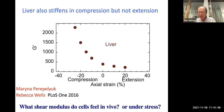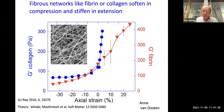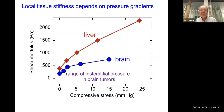That has an interesting consequence because in the body, most soft tissues are compressed or stretched - they're not just floating around in tissue culture medium. The local stiffness that a cell might feel may not be the stiffness we measure once we excise that tissue and put it in a rheometer in vitro. This response of the liver is exactly the opposite of what a collagen or fibrin gel would do.